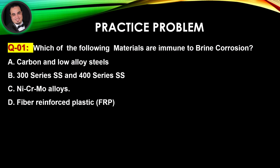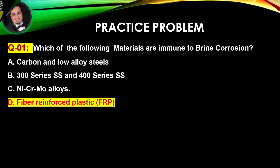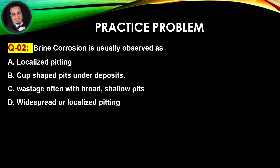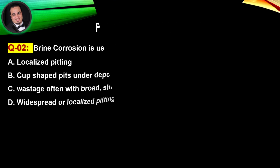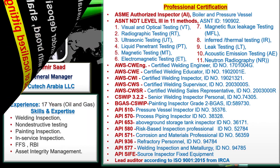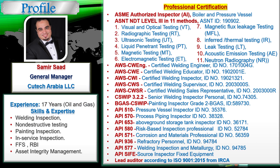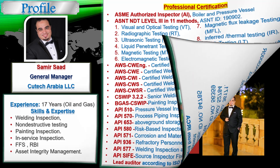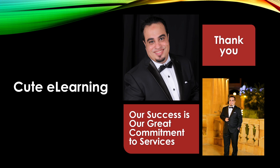Practice time. Question number one: which of the following materials are immune to brine corrosion? Answer is D. Question number two: brine corrosion is usually observed as? Answer is D. This lecture is prepared by Samir Saad. Thanks a lot for watching, and please stay with us for the next lecture.